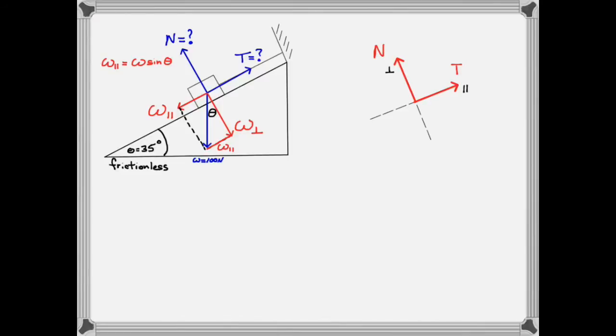And W perpendicular is equal to W times the cosine of theta. So now we can add these two components to our component diagram.